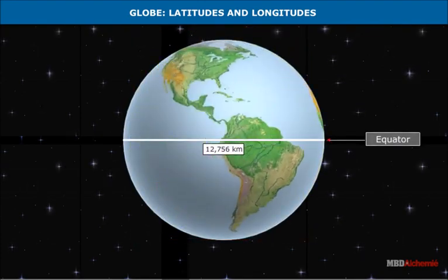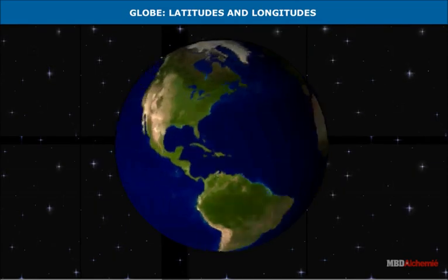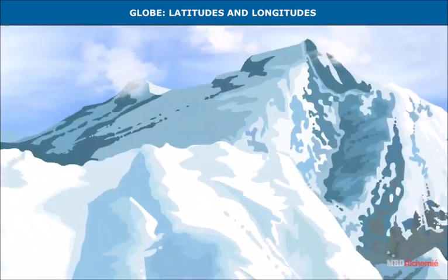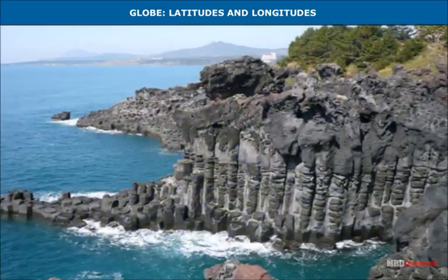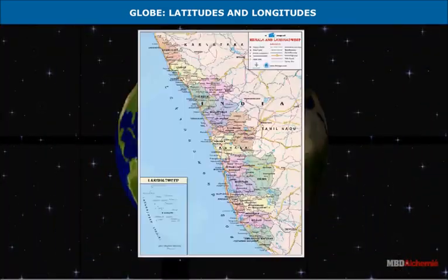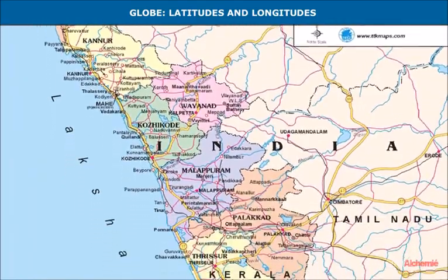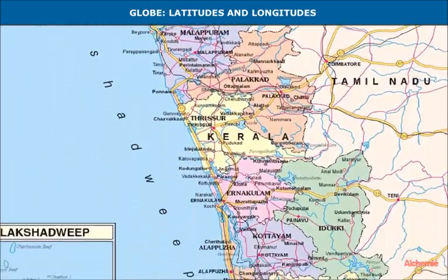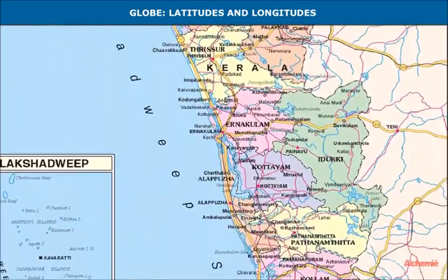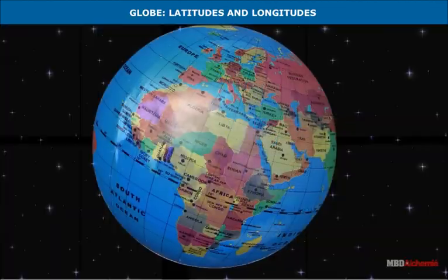It is difficult to grasp the size of the earth, to explain its many features, or to locate places on it without some model or aid. A globe is a model representing the earth.